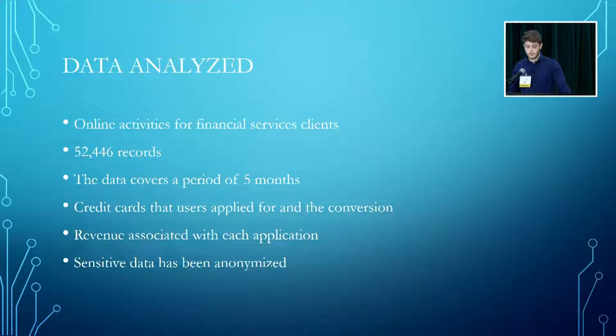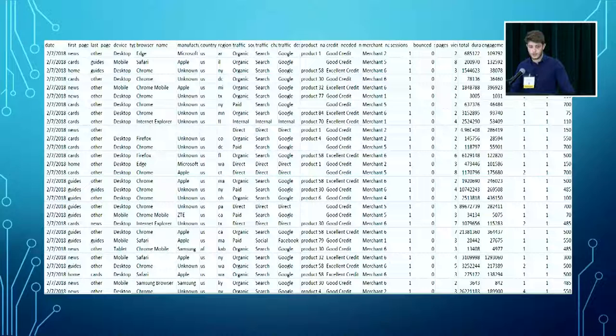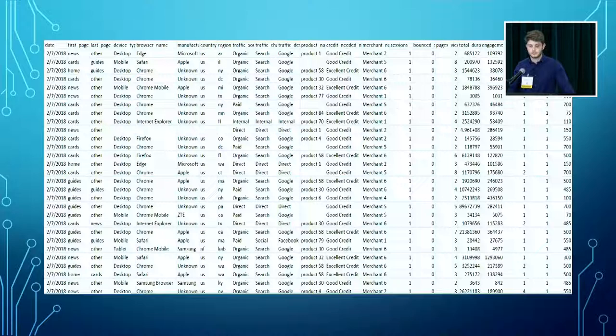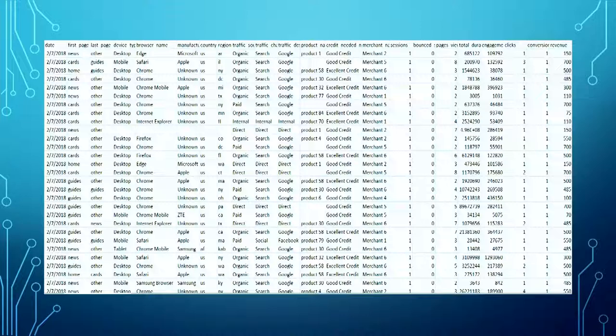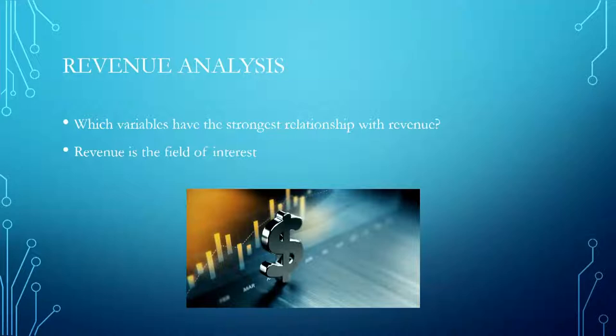Some of the data collected has been anonymized because some of that information is sensitive — in order to keep privacy. The data includes the date of purchase, the web pages customers are searching when making the purchase, the device they're using, the browser, country, region, and the product. The merchant name has been anonymized to protect the privacy of the company. We also have the conversion of those purchases and the revenue generated.